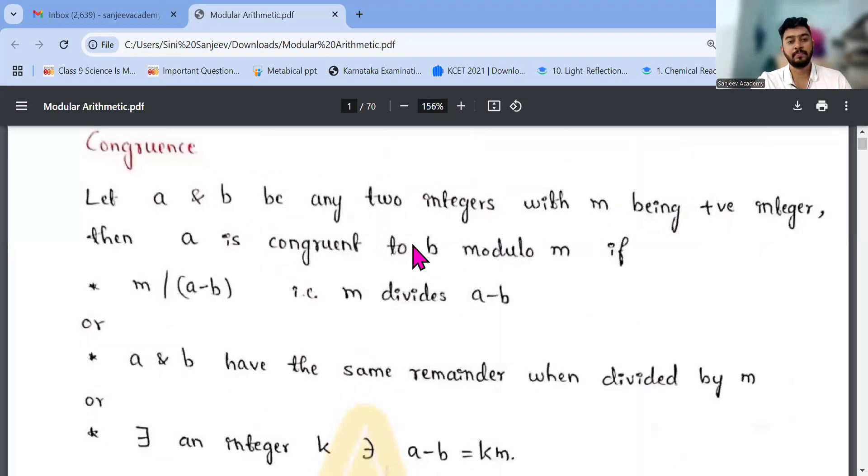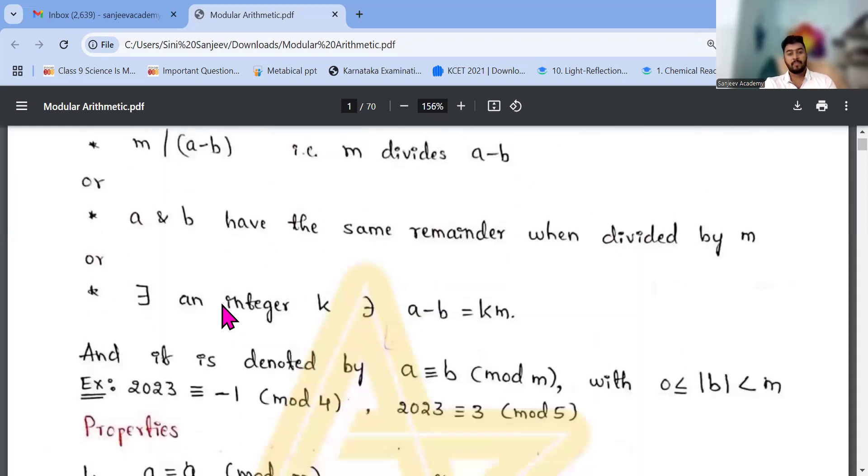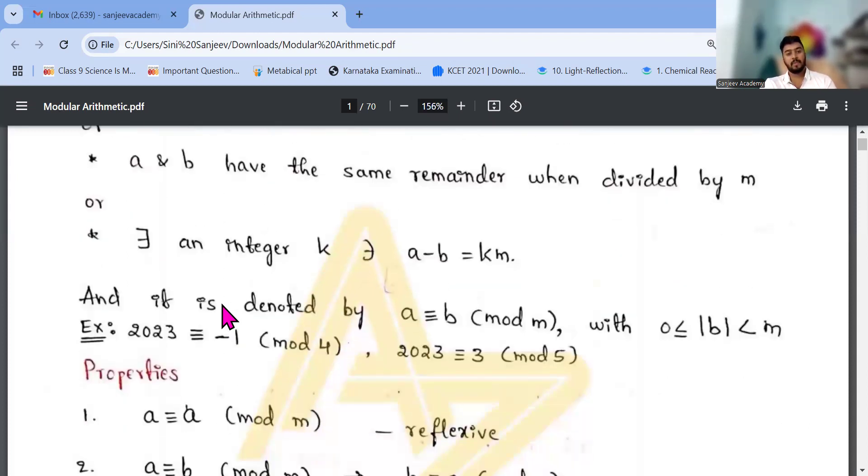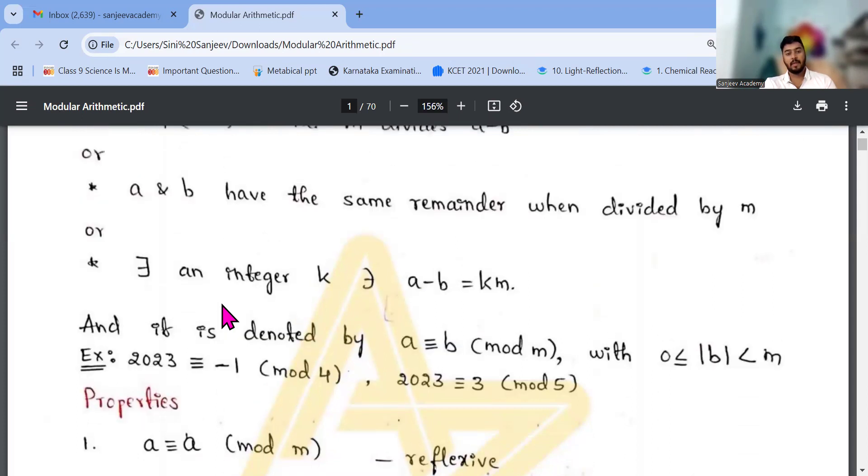modulo m if m divides a minus b. That is m divides a minus b, or a and b are going to have the same remainder when divided by m. And suppose a congruent b mod m, the meaning of this is with 0 less than b less than m. Then what is it? 2023 is equal to minus 1 mod 4 and 2023 is congruent to 3 mod 5.